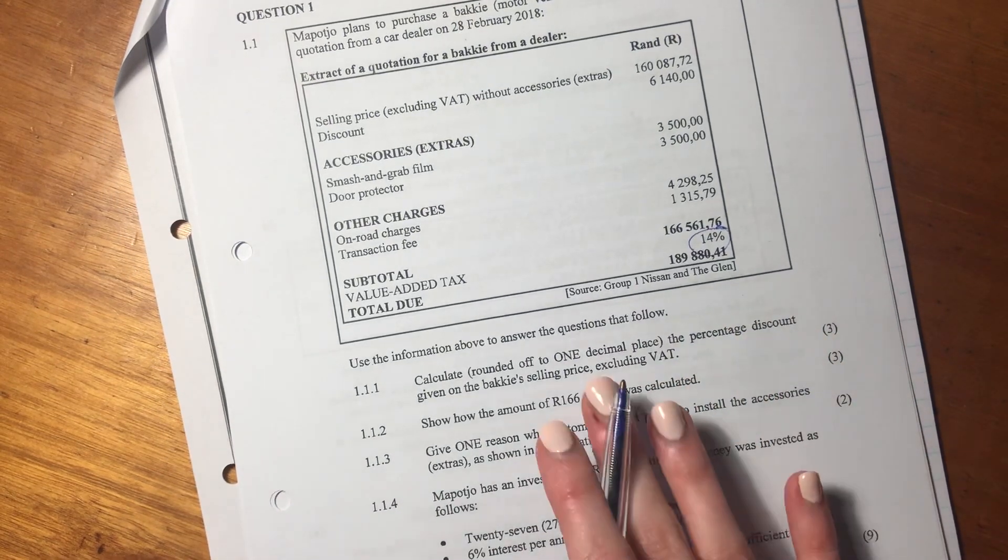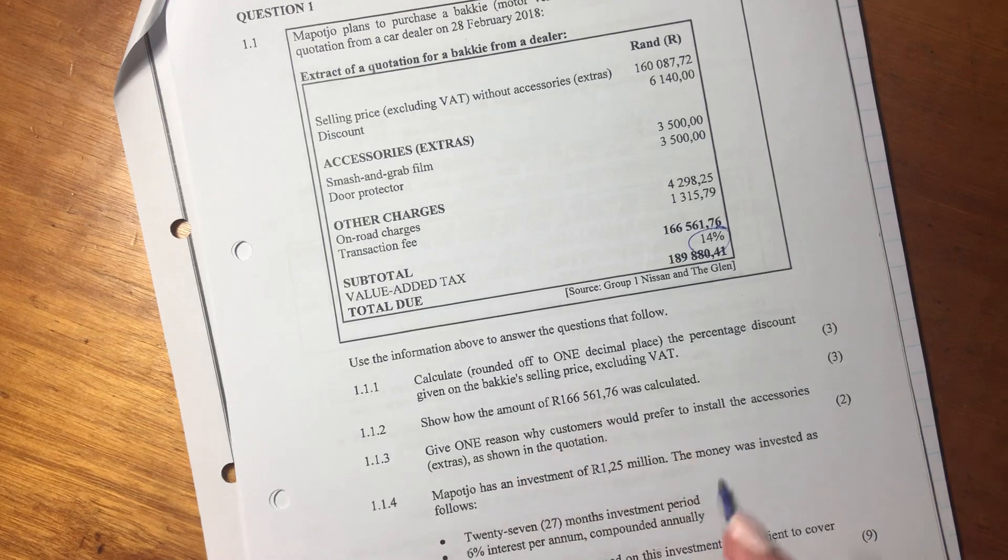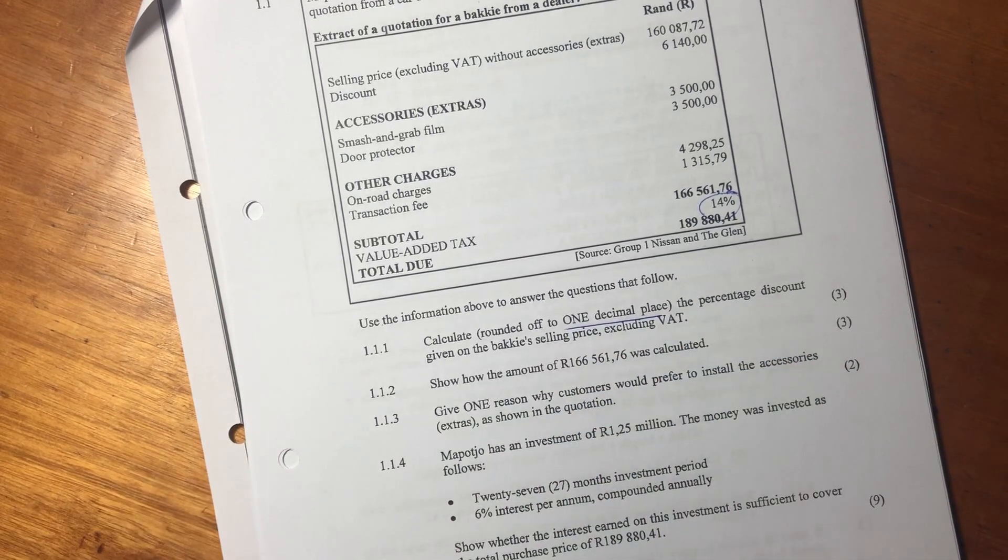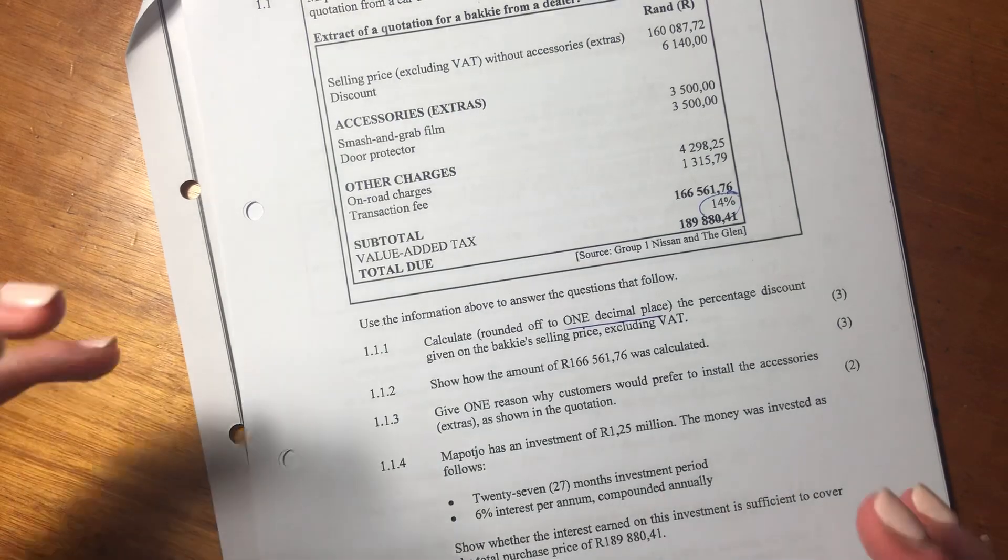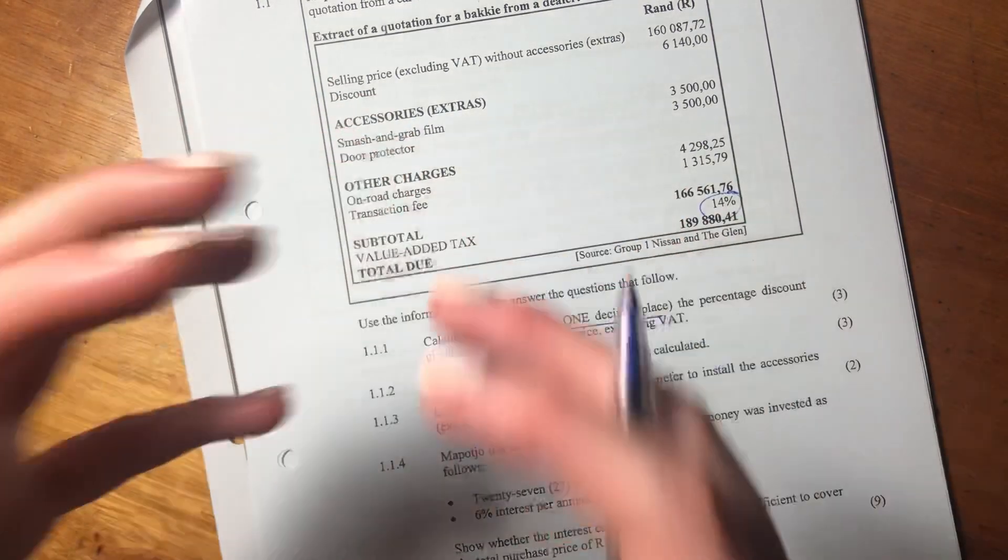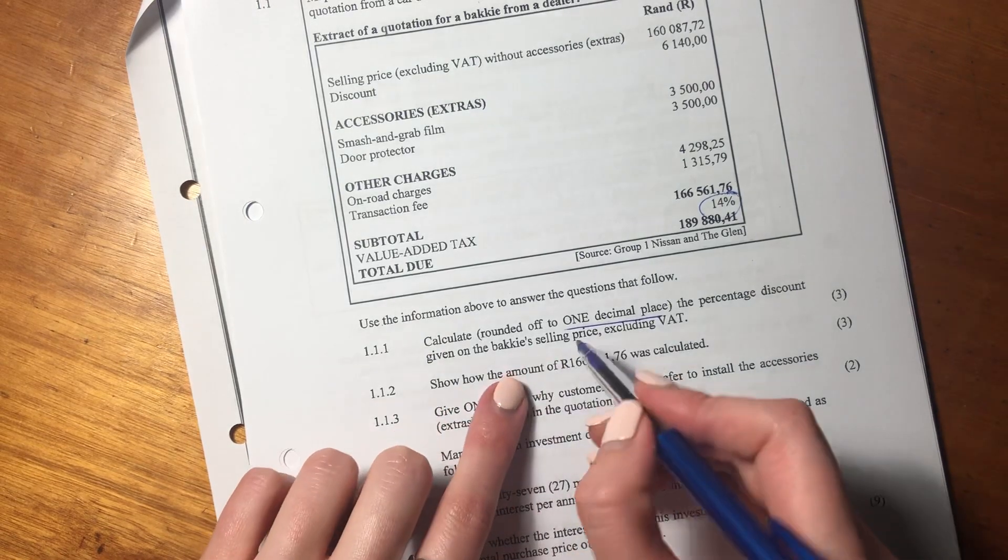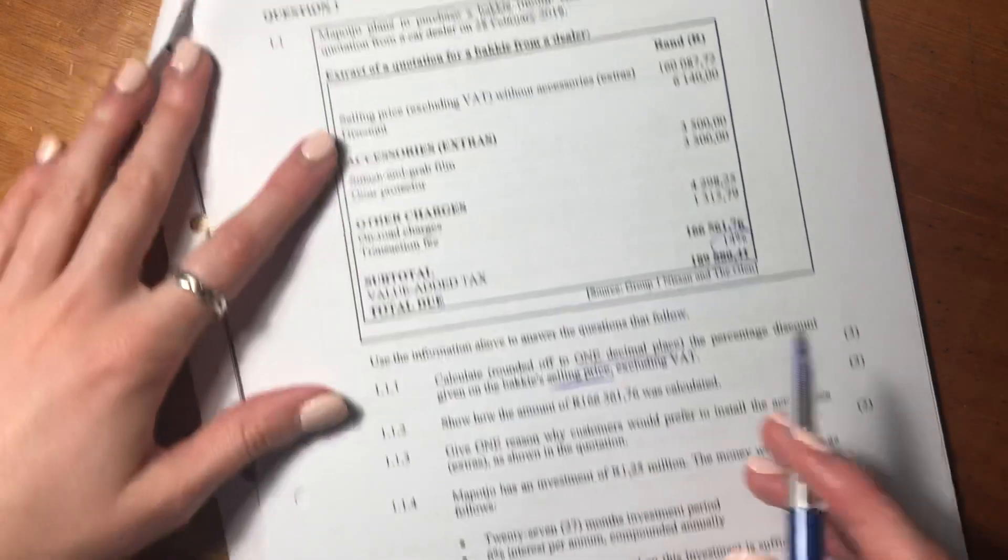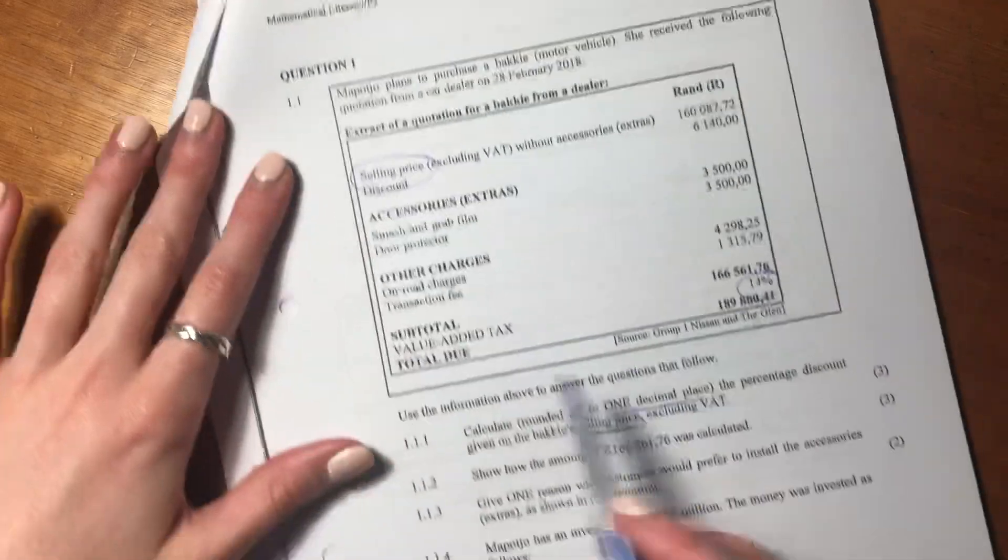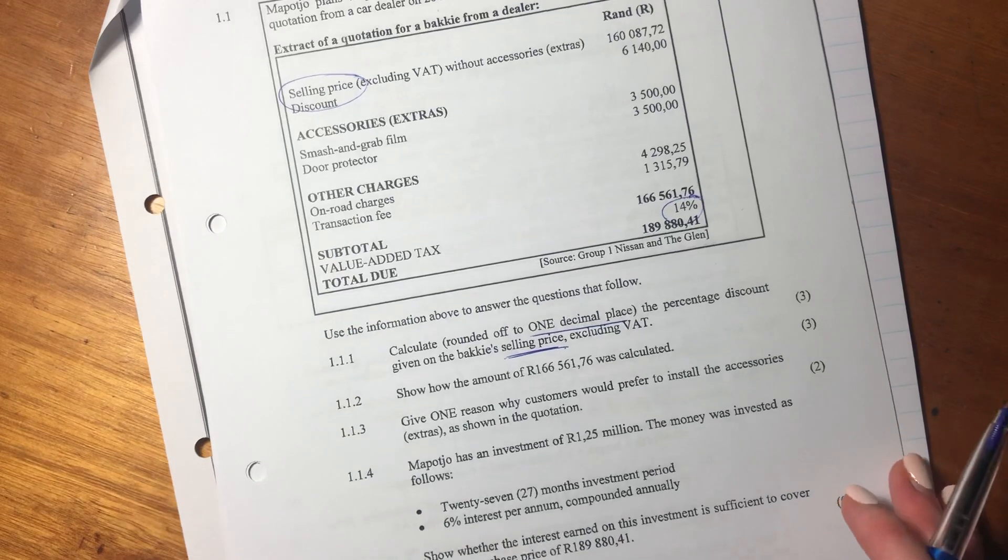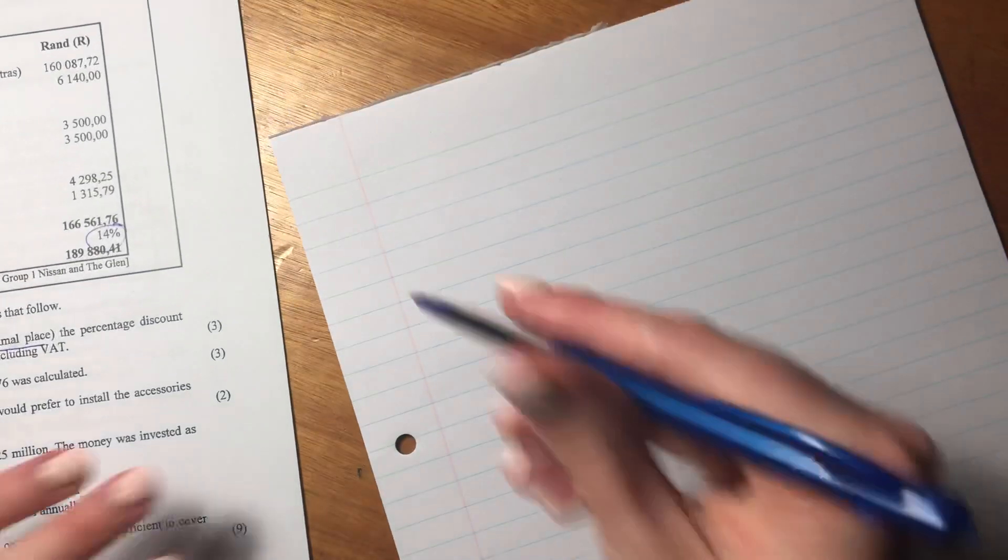It says use the information above to answer the questions that follow. Calculate, rounded off to one decimal place - always very important to remember what format they're asking you to put the answer into - the percentage discount given on the Bucky's selling price. So it's wanting it as the percentage of the selling price, not the total due. It's important to read what's being asked.